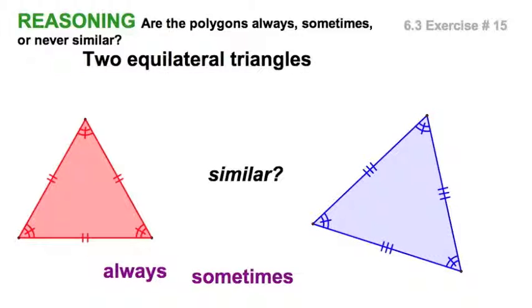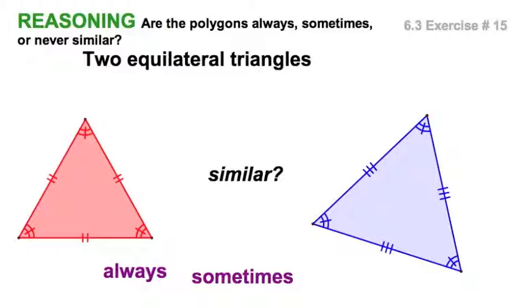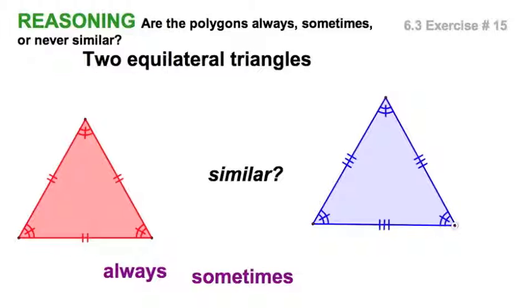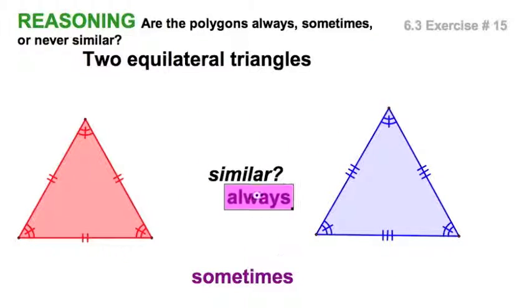There's 180 degrees of interior angle measurement, so each of these angles is 60 degrees. That's true for the red one. That's true for the blue one. So those angles are all going to be the same, and that's going to be true all the time. I'd give this one the always. Go away sometimes.